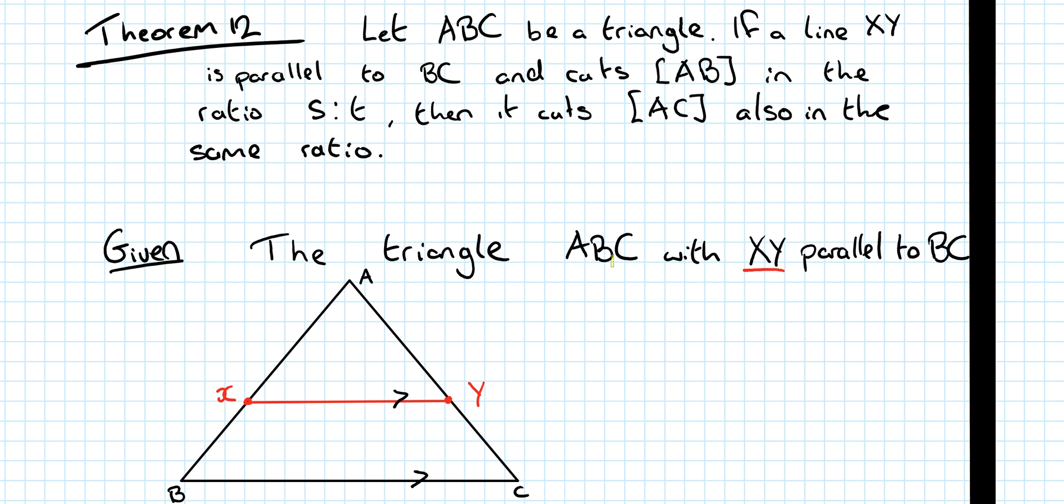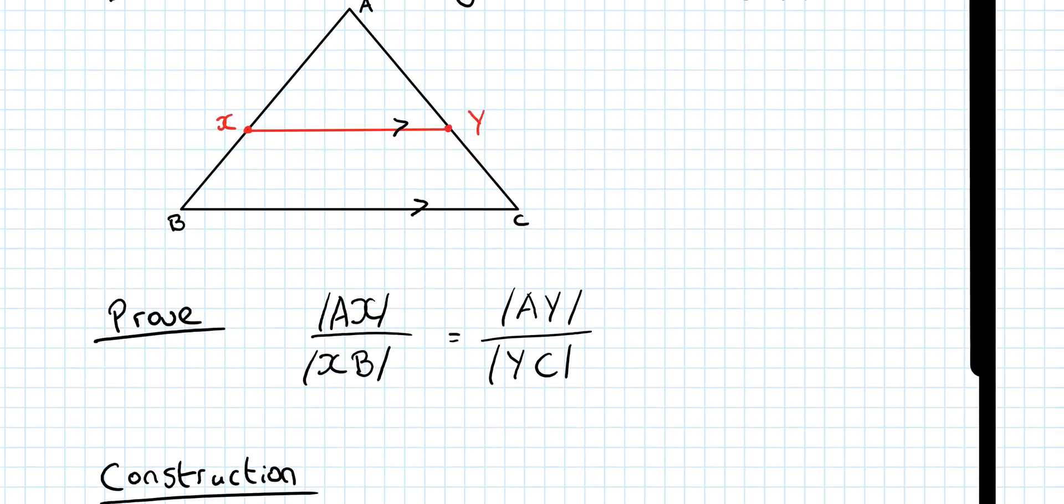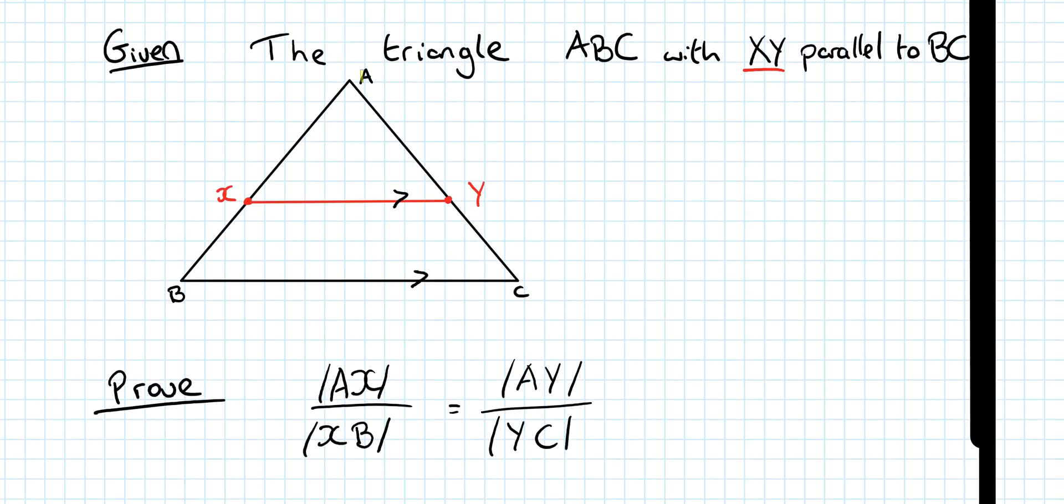So, what are we given? We're given a triangle ABC with XY being parallel to BC. So, it's stated as fact that this line is parallel to this line. What do I want to prove? I want to prove that the ratio of AX over XB is the same as AY over YC.